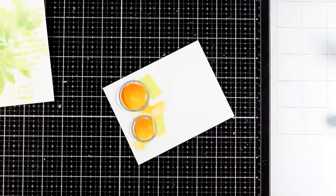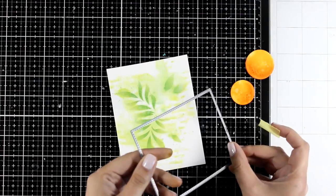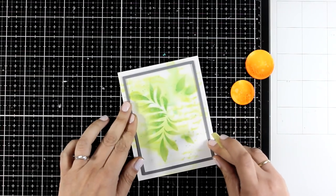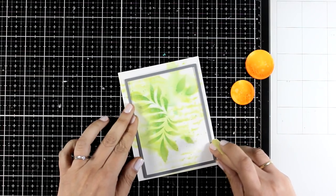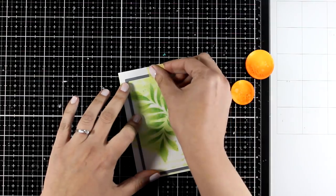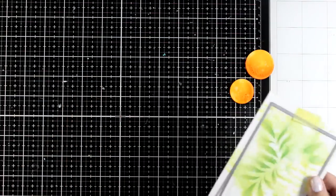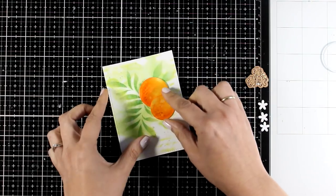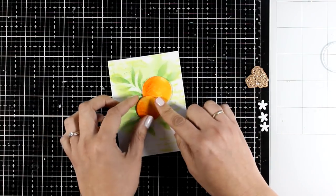Now I'm using a rectangle die that has some stitching all around, and I'm going to cut out this panel. This is going to give a lovely detail on the edge. And then on top of that I'm just going to stick my oranges. I'm using foam tape at the back so this way I achieved some dimension.